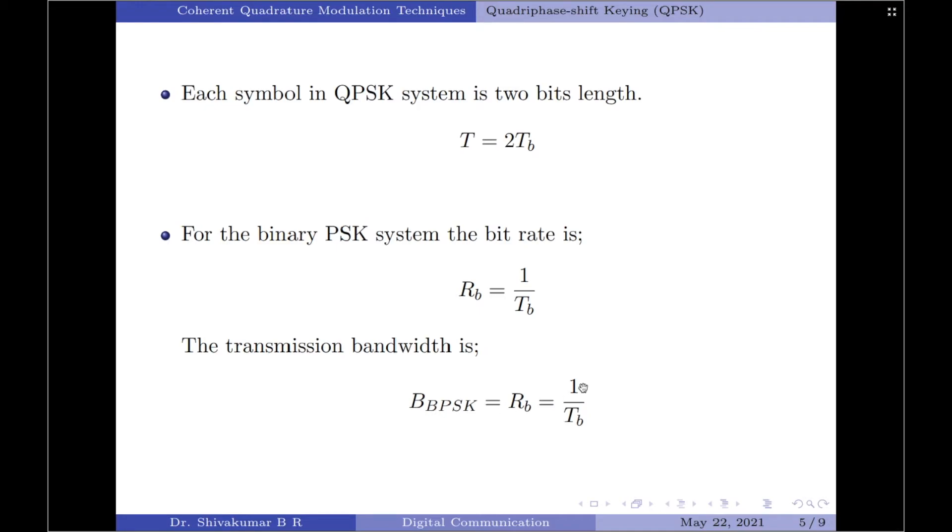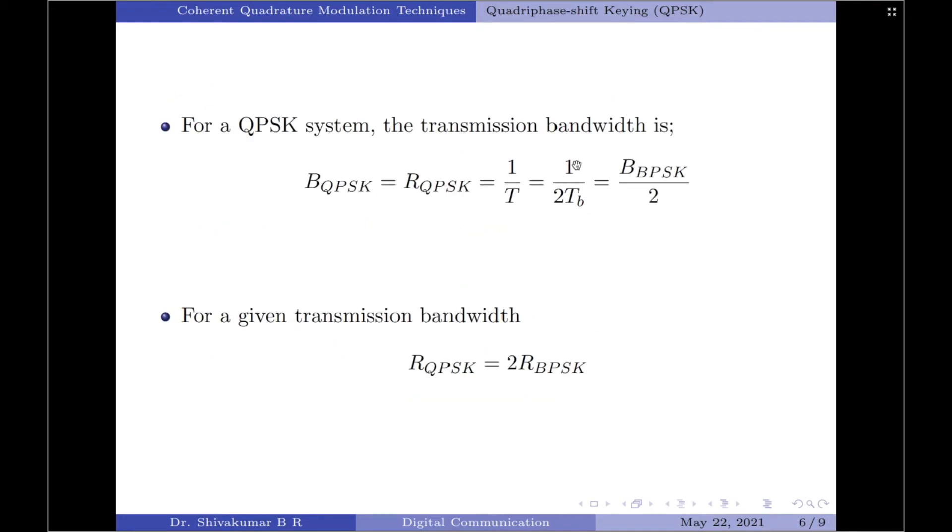Since binary PSK bandwidth is 1 by Tb, 1 by 2Tb can be written as the bandwidth of binary PSK divided by 2. Therefore, for a given bit rate of 1 by Tb, a QPSK wave requires only half the transmission bandwidth of the corresponding binary PSK system.